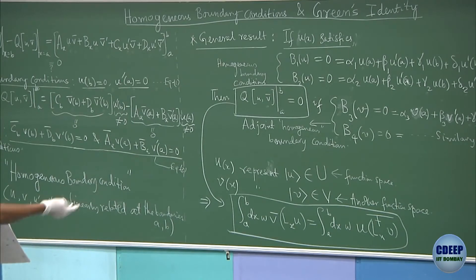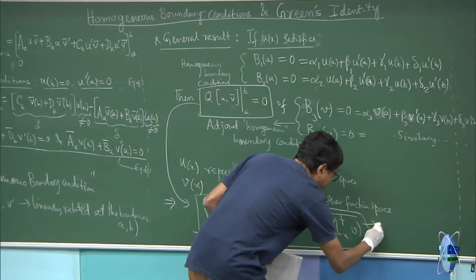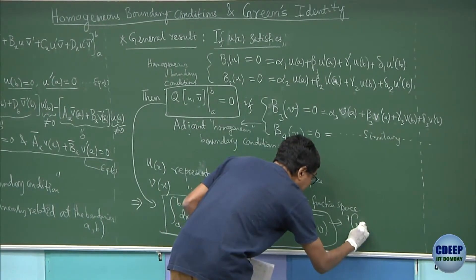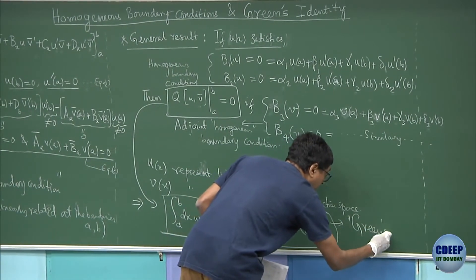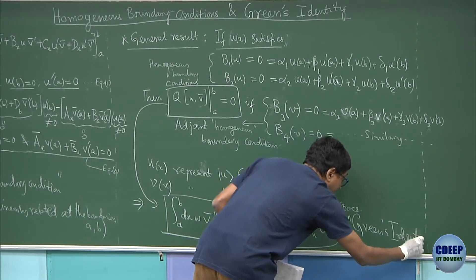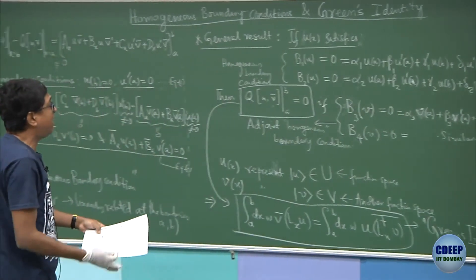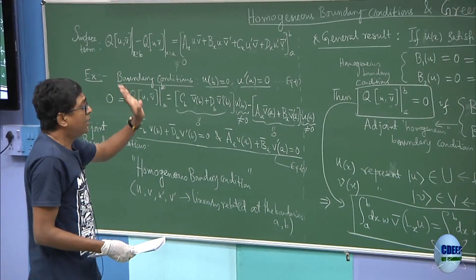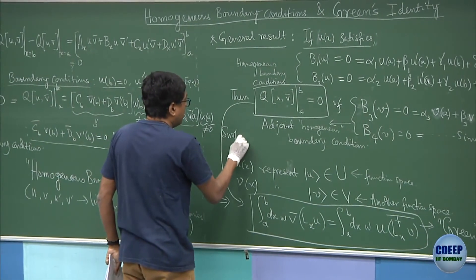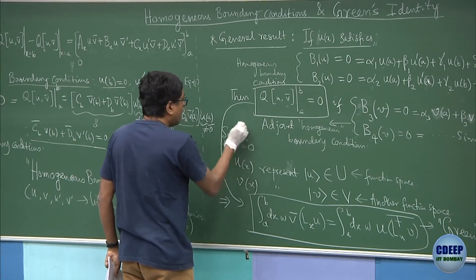Because the boundary term has vanished, the generalized Green's identity now becomes this identity — which has a name, and that is Green's identity. So by choice of suitable boundary conditions, we have gotten rid of the boundary term. The surface term is now equal to zero.